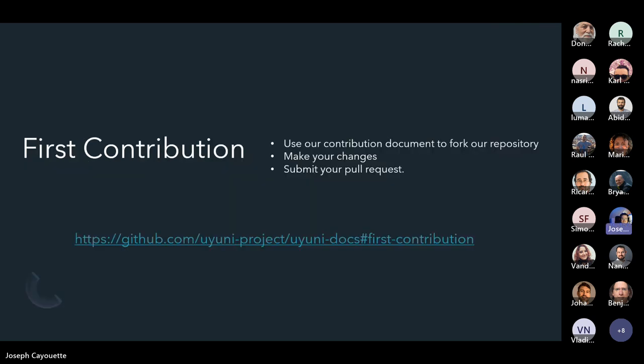I'm not going to go too deep into first contribution because we already have a very extensive document on this covering how to fork the project, make your first clone, make your changes on your fork, and then push that content as a PR to upstream. Please check out this link if you'd like to contribute.